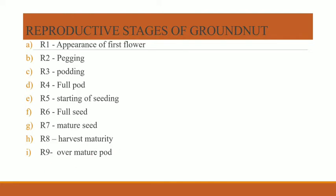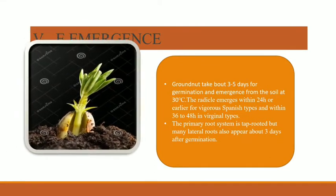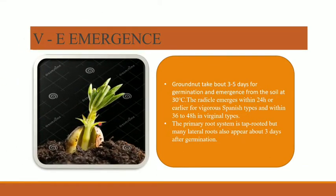Let us discuss the VE emergence stage. This is the stage of the emergence of the groundnut — how it is coming out of the ground. The groundnut takes about 3 to 5 days for germination after sowing, and emergence from the soil occurs at an optimal temperature of 30 degrees Celsius.